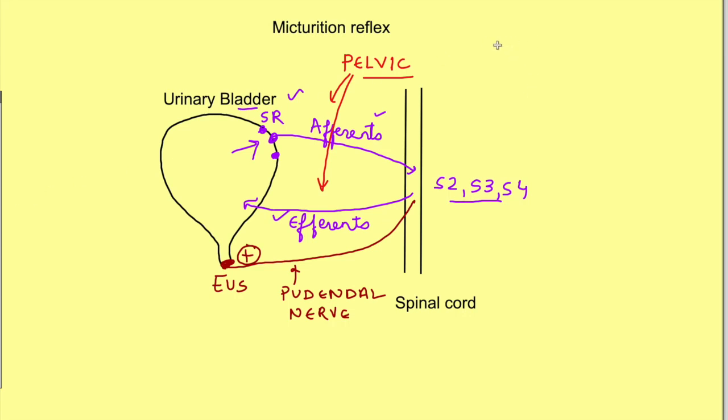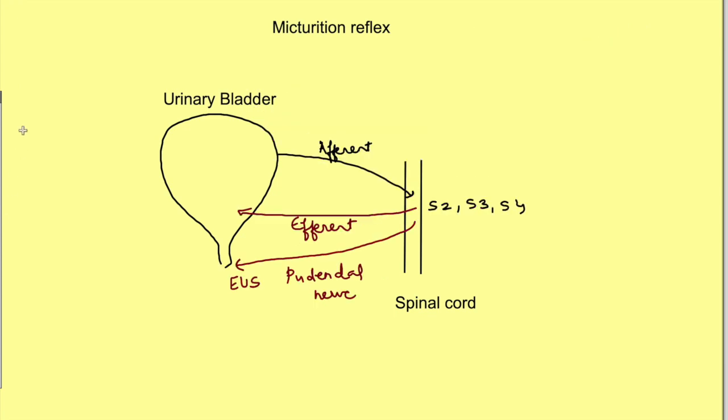This is the simplest micturition reflex, but you should remember that this micturition reflex is okay in infants, but later on in life, after three years of age, we develop a control over this micturition reflex. That means the voiding of the urine as well as the stopping of the micturition can be voluntarily controlled. This is done by some higher centers which are present at the level of midbrain and pons.